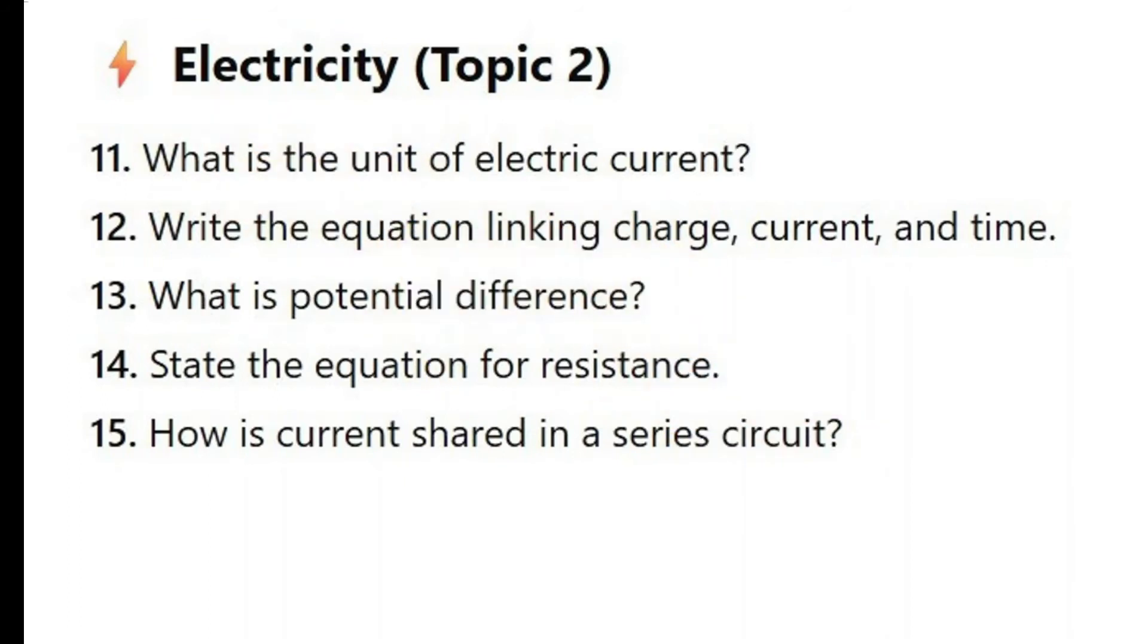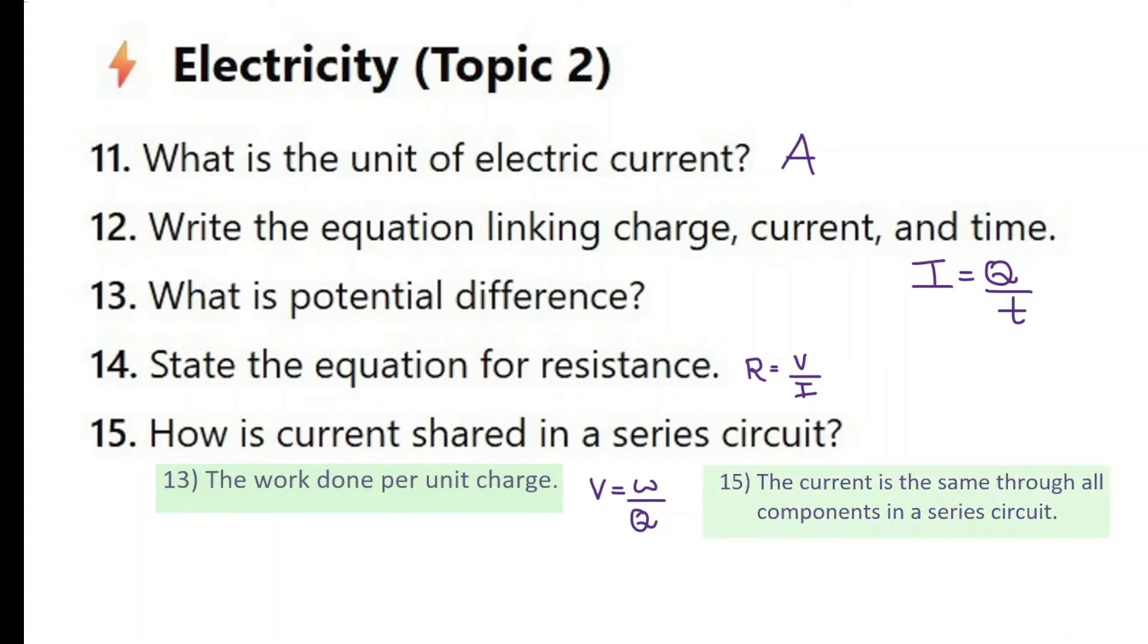Here are some quick fire questions on electricity topic. Let's do these five questions and I will talk them through when you are ready. What is the unit of electrical current? Electrical current is measured in amps. You can use the short form as amps. Write the equation linking charge, current and time. So current I is equal to charge Q divided by time. I equals Q over T. What is potential difference? So potential difference is work done per unit charge. So if you think about the formula V is equal to work done over Q. State the equation for resistance. So V is equal to IR. R is equal to V over I.